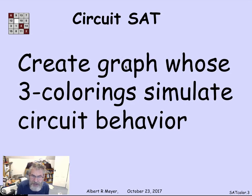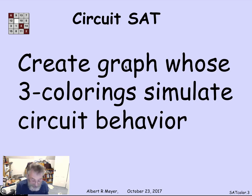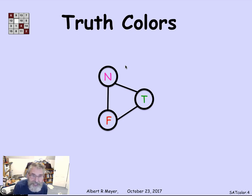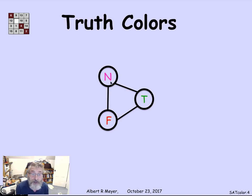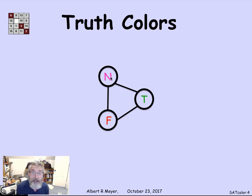The way I'm going to reduce the circuit problem to three-coloring is by building a graph where the three-colorings of this particular graph simulate the way the circuit does calculations with truth values. I'm going to build a little gadget — a triangle — so that I can be sure the three vertices in this triangle have different colors. I'll arbitrarily call them: one is the true color, one is the false color, and one is the neutral color.